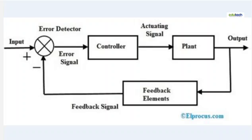In a control system, a control loop encompasses several essential components that work together to achieve a specific control objective. These components include the input, error detector, error signal, controller, actuating signal, output, and feedback signal.